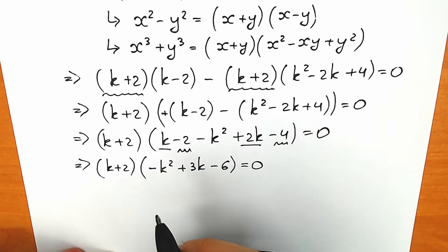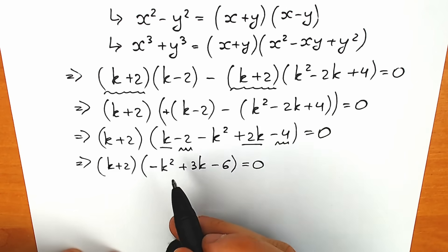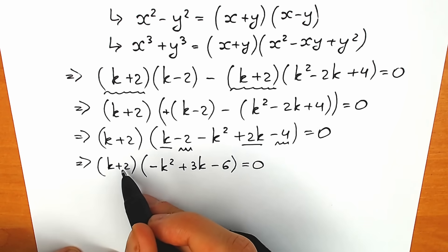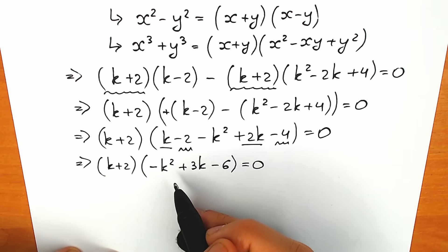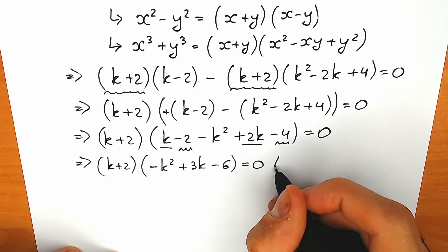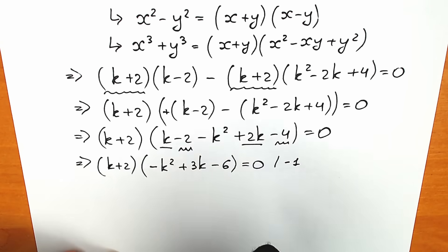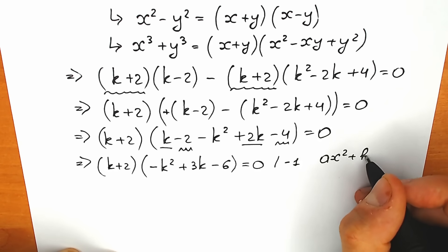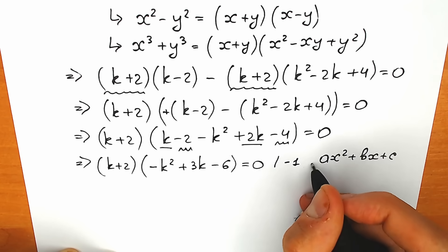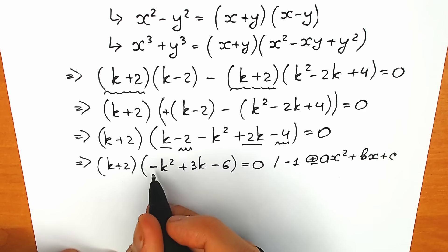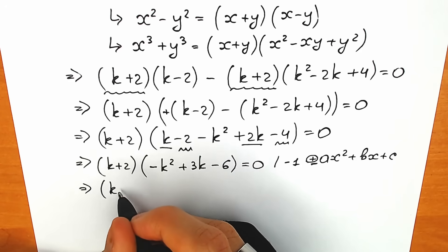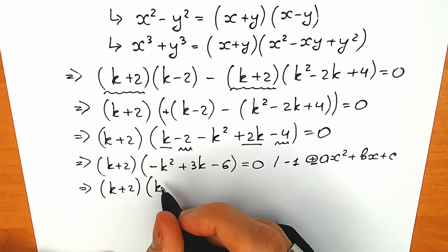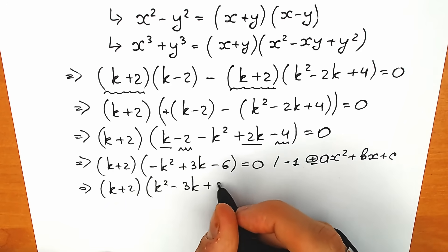We have a product of two parentheses equal to zero, so either the first or the second parenthesis equals zero. I suggest multiplying both sides by minus 1, because a lot of students prefer the classic form ax-squared plus bx plus c with a positive leading coefficient. So we get: (k plus 2) times (k-squared minus 3k plus 6) equals zero.